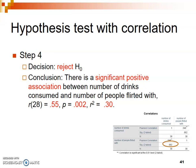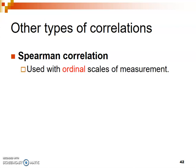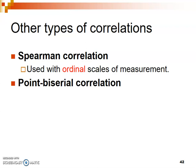That's how you conduct a hypothesis test using the Pearson correlation. There are also other types of correlations for when your variables are not both on interval or ratio scales of measurement. The Spearman correlation is used when you have an ordinal scale of measurement — for example, small, medium, and large. You can use the Spearman correlation in place of the Pearson correlation to find the relationship between two ordinal variables.